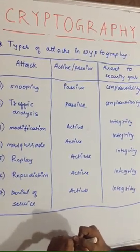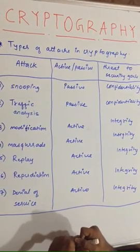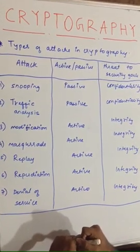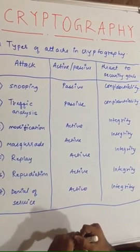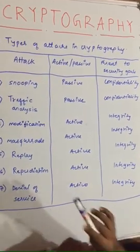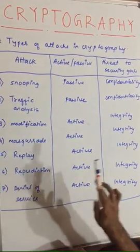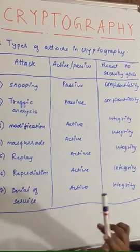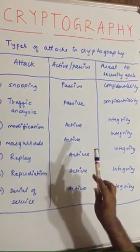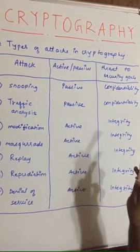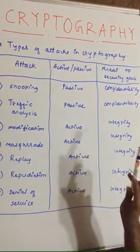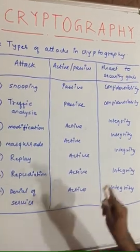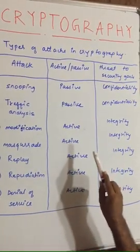Hello friends, this lecture is all about types of attacks in cryptography. Here we have drawn three columns: the attack, what kind of attack it is, and what threat it proposes to the security goals.